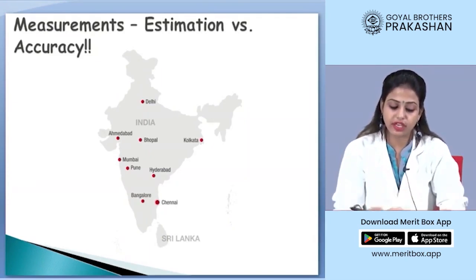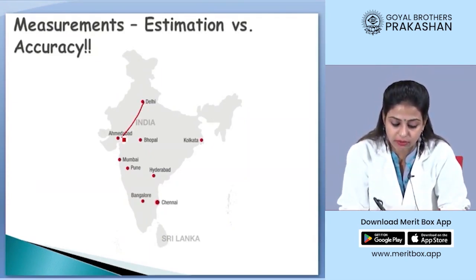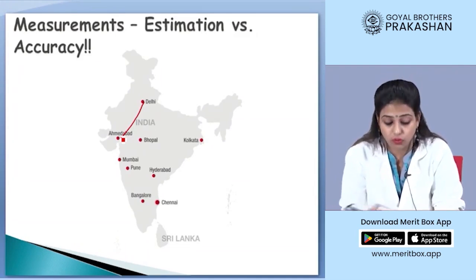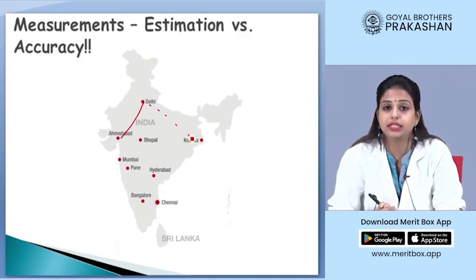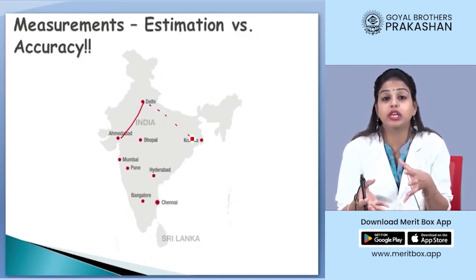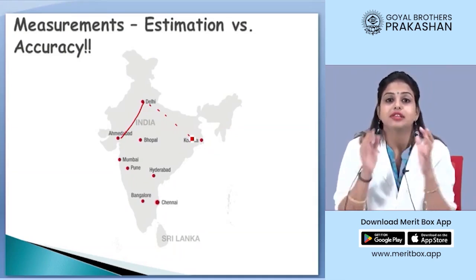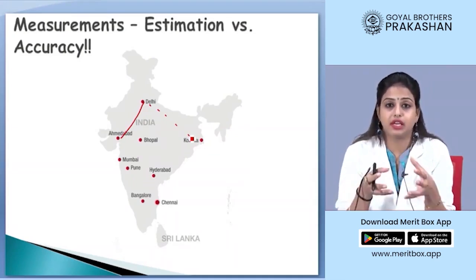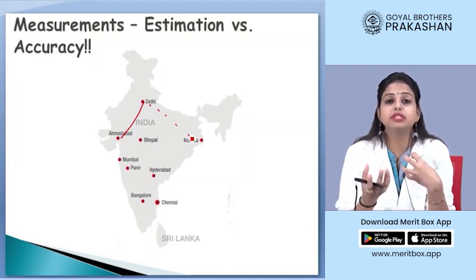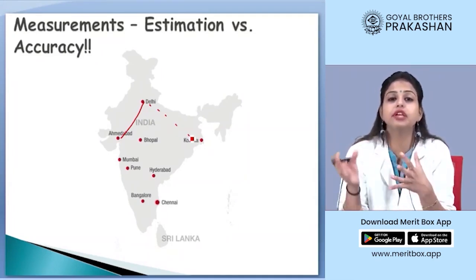On the other hand, if I ask what is the distance from Delhi to Ahmedabad — if you already knew the distance between Delhi and Kolkata, you can answer in comparison that it is one half or approximately equal to that distance. This is what we do every day — we are approximating or estimating different measurements.